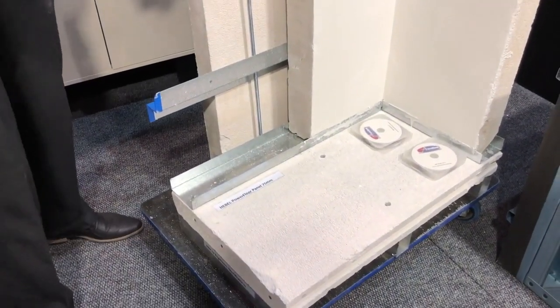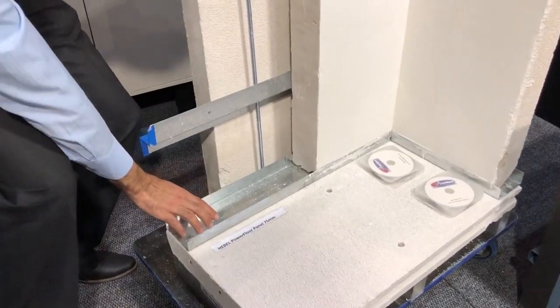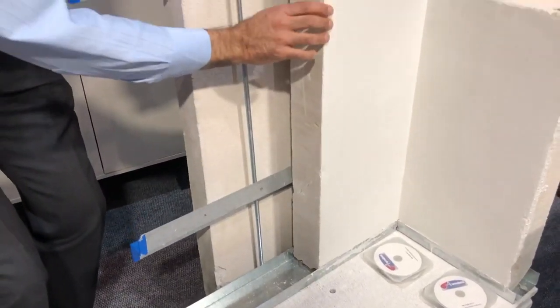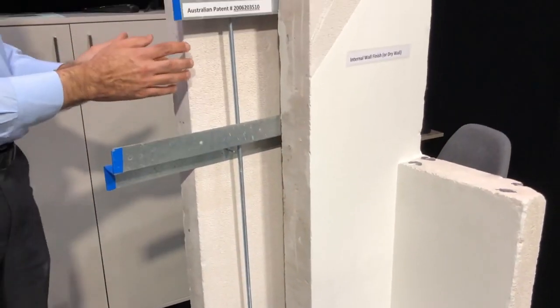If you are starting from your slab here, this is your slab, this is the bottom track, this is your internal wall, and this is the cavity and this is your external wall.